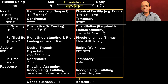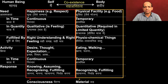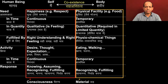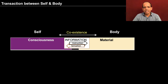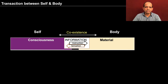Try to see — how do we make out that you are there? How do we make out that the body is there? Have you ever given a thought to this? How do you know that the body is there? How do you know that you are there? How do you know that you coexist with the body? You will see that there is a self — that is you — and there is a body, the material entity. The two are coexisting and there is a transaction of information between the self and the body.